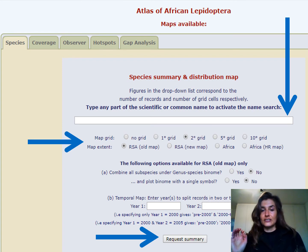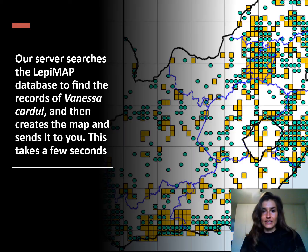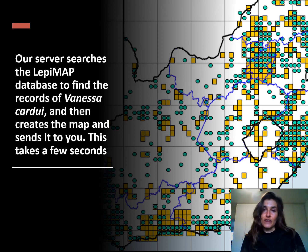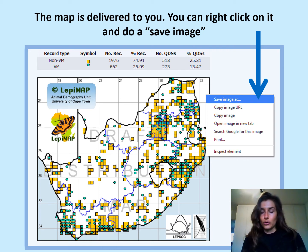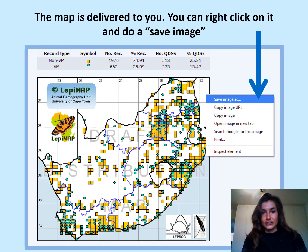Then you select the type of map that you want and then you click on request summary. Our service searches the LepiMap database to find the records for Painted Lady, creates this map and then sends it to you. This only takes a few seconds and you can then very easily just right click on this map and save it to your desktop, laptop or cell phone. Then you have an up-to-date species distribution map that you can use for whatever purpose you choose.